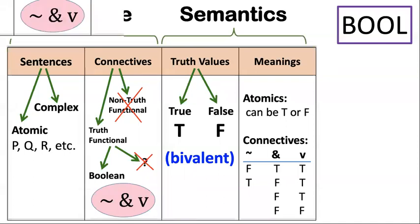Hi folks, in this video we talk about Boole's truth functionality. Previously we talked about the language of Boole and how there's two parts to it — the sentences and the connectives — and we said that the connectives, the Boolean connectives, are actually truth functional ones. In order to explain what that means we have to add the next part to our system: the semantics.